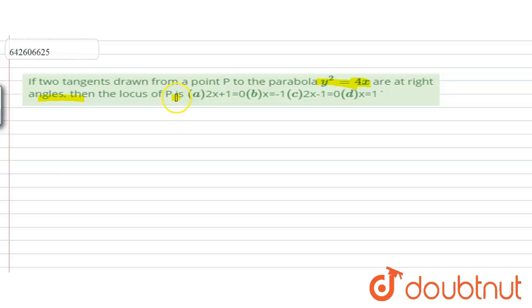then the locus of P is: option A, 2x plus 1 equals 0; B, x equals minus 1; C, 2x minus 1 equals 0; and D, x equals 1.